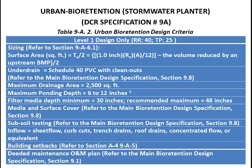For urban bioretention, the required surface area is also computed as the treatment volume divided by the equivalent storage depth. The equivalent storage depth is computed as the depth of media, gravel, or surface ponding multiplied by the accepted void ratio. Urban bioretention is limited to 2,500 square feet of drainage area to each unit. Larger drainage areas are allowed in special cases. The drainage areas in these urban settings are typically considered to be 100% impervious.